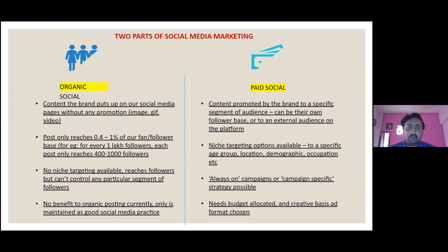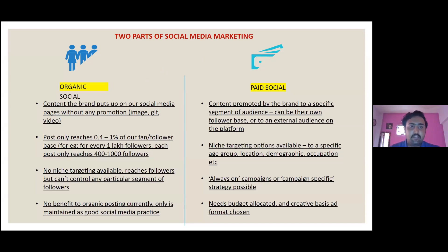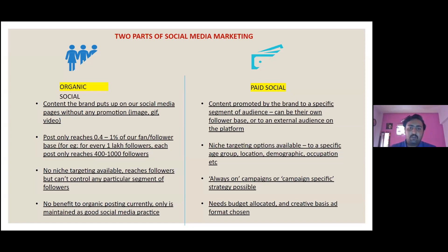When you create a page on social media, you have two options: put money into it (paid social) or don't (organic marketing). Content the brand puts on social media pages without any promotion is organic marketing — it typically only reaches 0.4 to 1 percent of your followers. For example, if you have 1,000 followers, an organic post might get only 100–200 likes maximum.